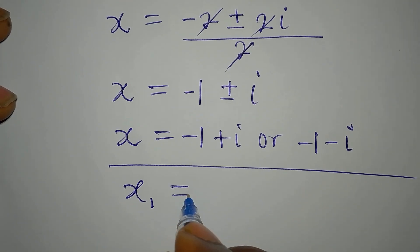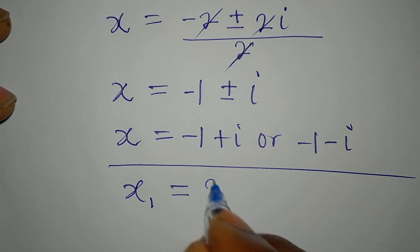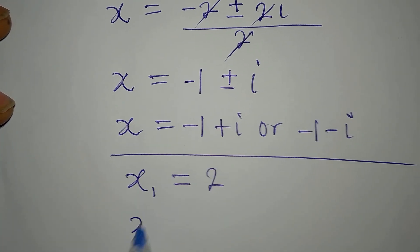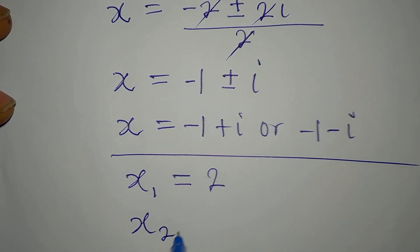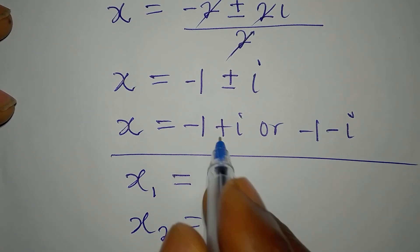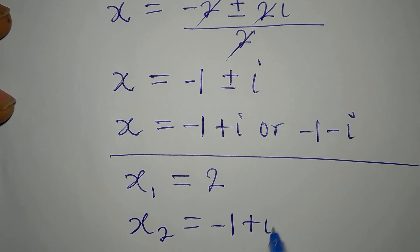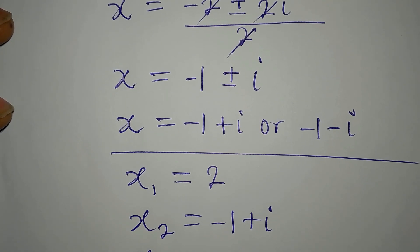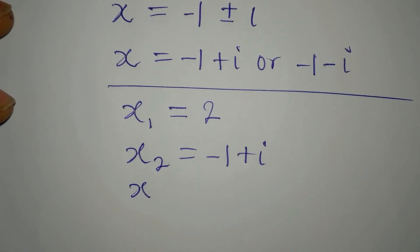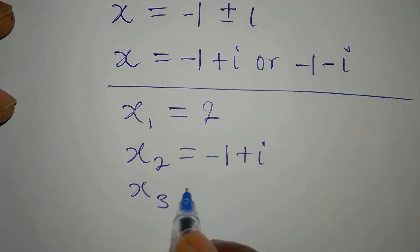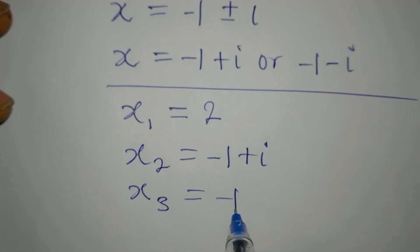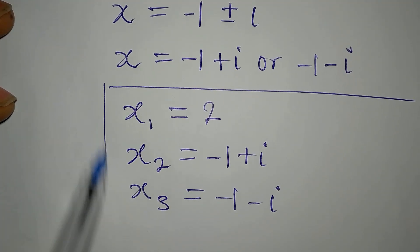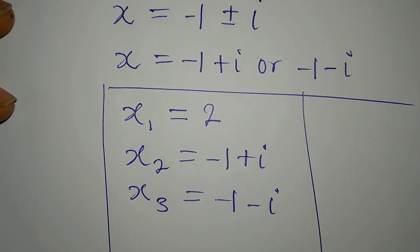So the three solutions are: x₁ equals 2 (the real solution we found earlier), x₂ equals negative 1 plus i, and x₃ equals negative 1 minus i. These are the three complete solutions to the equation.